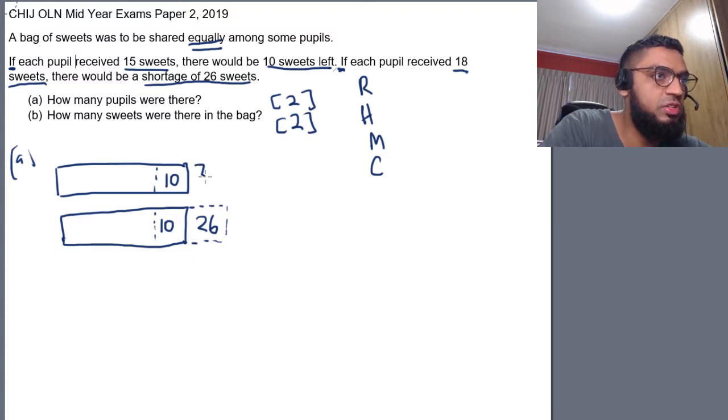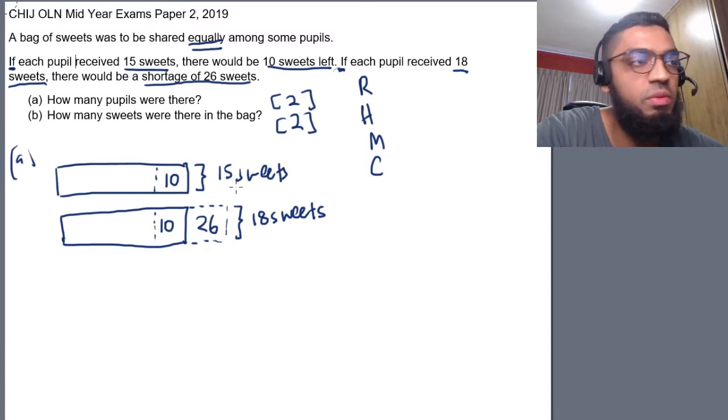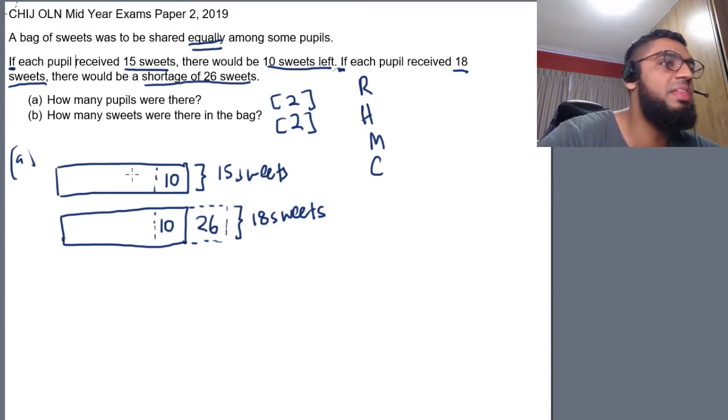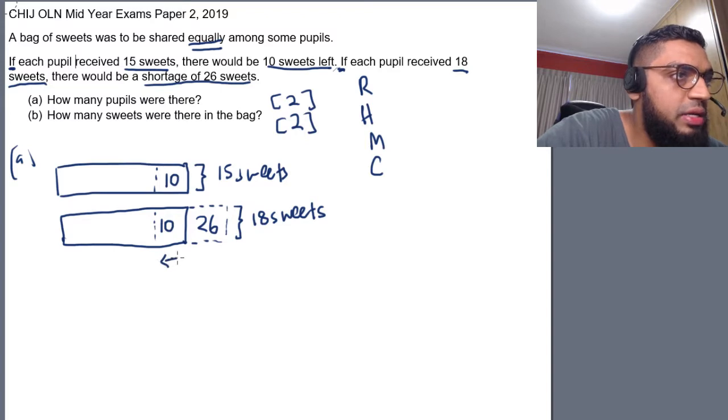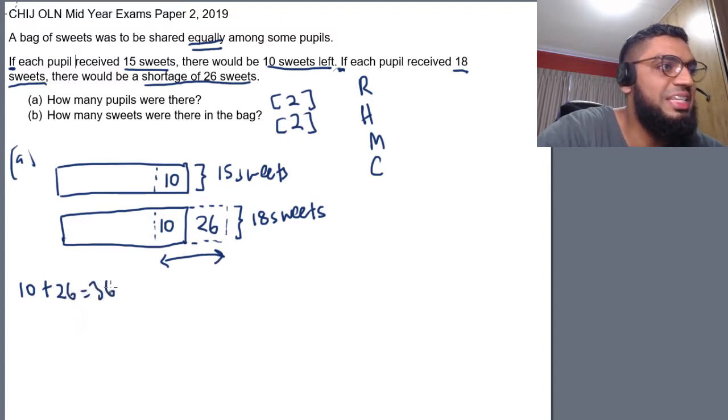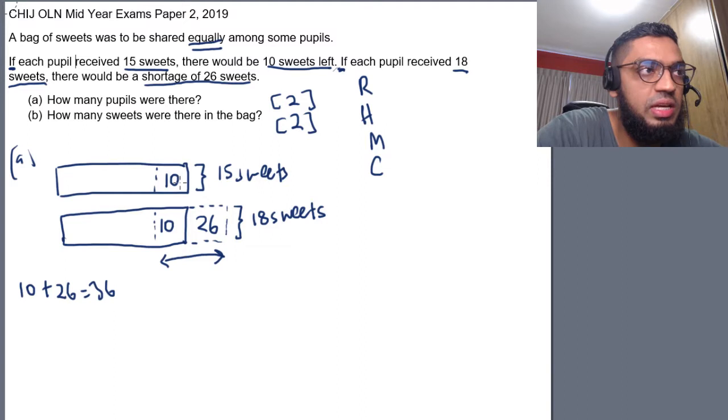So, this is the case, the first one where I give 15 sweets. And if I increase it to 18, increase it by 3, I will need another 26 sweets. Because of this increase from 15 to 18, I'll be short of 26 sweets. So, the method is actually quite simple. All you have to do is add up this part here. 10 plus 26. That will give us 36. So, this is the gap between the first case and the second case.